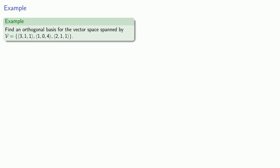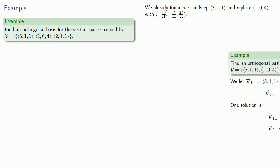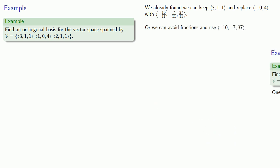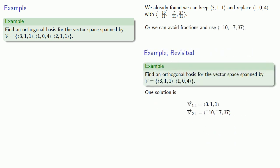What happens if we have three basis vectors? Let's find the orthogonal basis for the vector space spanned by a set of three vectors. Now, we already found that we can replace this vector (1,0,4) with (-10/11, -7/11, 37/11). Or, we can avoid fractions and replace this vector (1,0,4) with (-10, -7, 37).